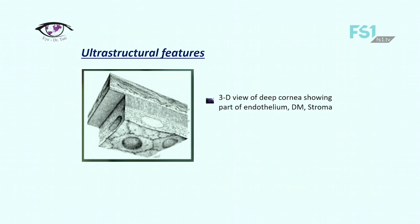The anterior cell membrane of endothelial cells is attached to Descemet's membrane by modified hemidesmosomes, and the posterior apical cell membrane faces the anterior chamber with 20 to 30 microns, participating in transporting function. The lateral borders of cells produce a complex of connections between neighboring cells. Here in this slide you can see a 3D view of the deep cornea showing part of the endothelium, Descemet's membrane, and stroma.